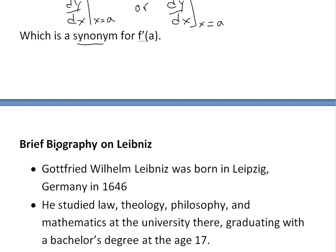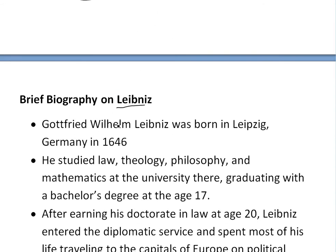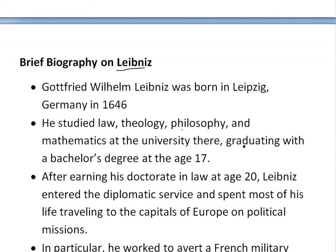Now I'm going to go over a brief biography of Leibniz, because this was in my calculus book and he's a pretty important figure in calculus. His full name is Gottfried Wilhelm Leibniz, and he was born in Leipzig, Germany in 1646. He studied law, theology, philosophy, and mathematics at the university there, and he graduated with a bachelor's degree at age 17 — pretty smart, especially as a kid. I had only graduated high school by then.